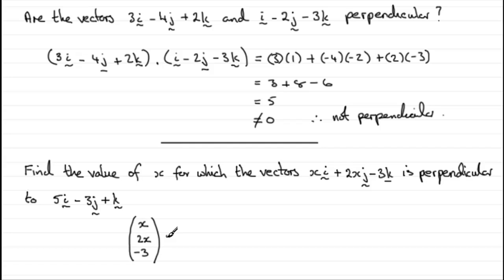And if we dot this with the other vector, 5 minus 3, 1, we should expect to get 0. And if we do this, what we end up with is that we get 5x minus 6x minus 3 equals 0.